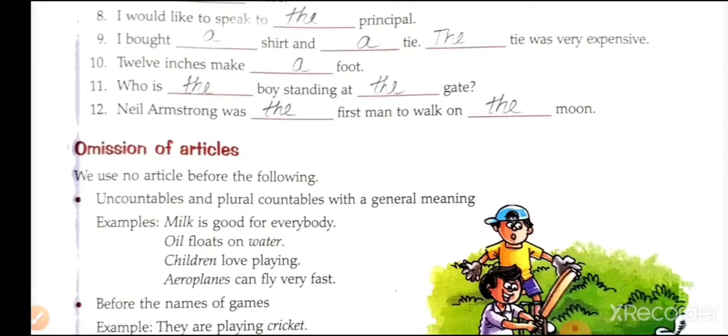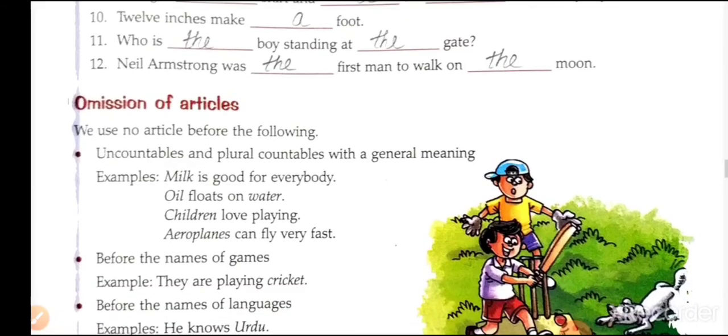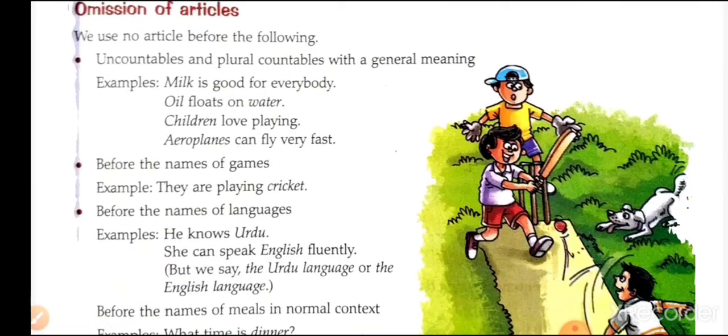Omission of articles — we use no article before the following: uncountable nouns and plural countable nouns with a general meaning. Examples: 'Milk is good for everybody'; 'Oil floats on water'; 'Children love playing'; 'Aeroplanes can fly very fast.' Before the names of games: 'They are playing cricket.' Before the names of languages: 'He knows Urdu'; 'He can speak English fluently' — but we say 'the Urdu language' or 'the English language.'